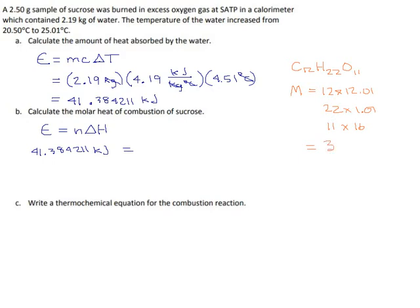For a grand total of, plus 22.22 plus 11 times 16 would be 176, 342.34 grams per mole is the molar mass for sucrose. The number of moles for anything is mass divided by molar mass.